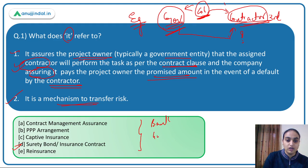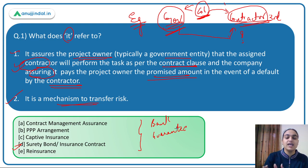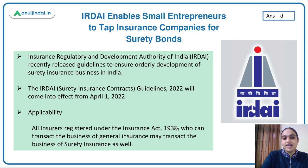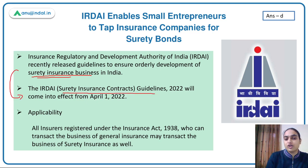The answer to this question is option B — surety bond or surety insurance contract. The assurance is provided to the project owner that the assigned project will be completed by the contractor, and in case of default, payment will be made. IRDAI — Insurance Regulatory and Development Authority of India — has issued the IRDAI Surety Insurance Contract Guidelines 2022.